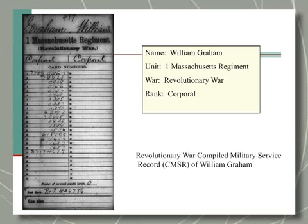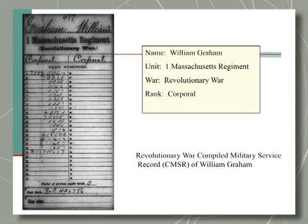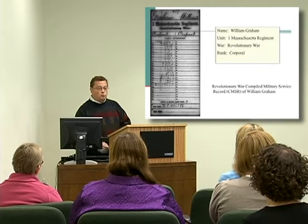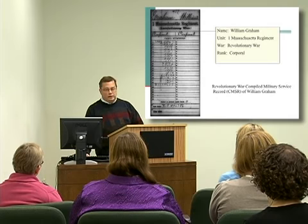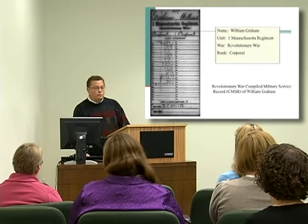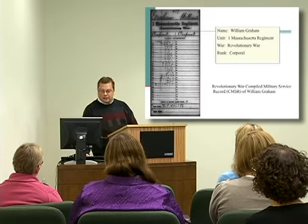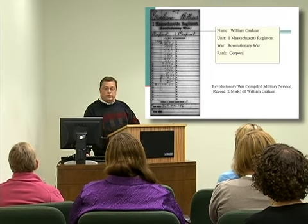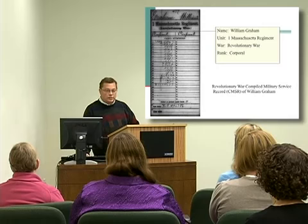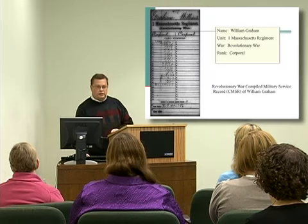We'll look at a specific example of a service record — William Graham, who served in the 1st Massachusetts Regiment during the Revolutionary War. The first image is of the jacket that the record is contained in. It gives basic information right on the jacket: the soldier's name, his unit, the war he served, the rank he held when he entered service, and the rank he held when discharged. There are also card numbers on the front of the jacket — each number is stamped on the back of one of the cards inside the jacket, used by the War Department to ensure the right cards were filed with the right jacket. If you look at the bottom of the jacket where it says bookmark, any numbers or notations there could lead you to other textual records in the National Archives holdings.